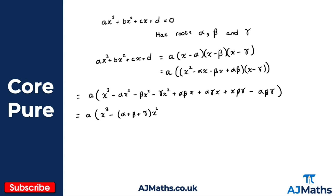We can now do the same here — I'm going to pull out the x, so we get plus a lots of alpha beta plus alpha gamma plus beta gamma, lots of x. Then we just have minus alpha beta gamma at the end.